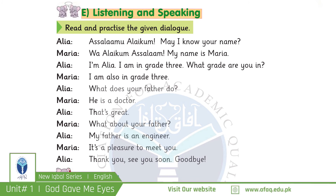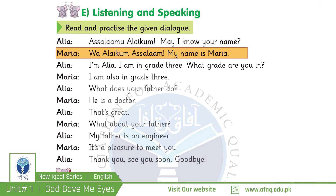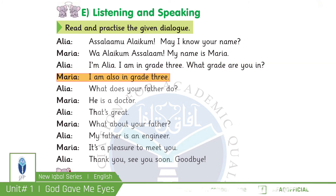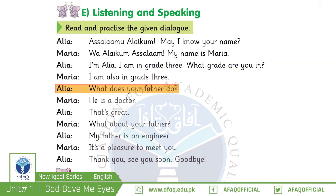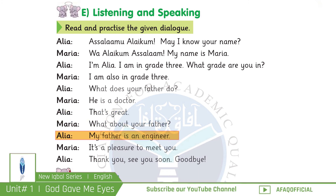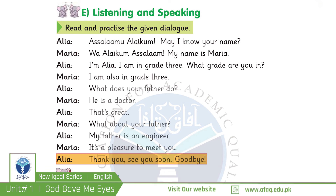Let's practice the dialogue. Alia: Assalamu alaikum, may I know your name? Maria: Wa alaikum assalam, my name is Maria. Alia: I'm Alia, I'm in grade 3 — what grade are you in? Maria: I'm also in grade 3. Alia: What does your father do? Maria: He's a doctor. Alia: That's great! What about your father? Alia: My father is an engineer. Maria: It's a pleasure to meet you. Alia: Thank you, see you soon, goodbye.